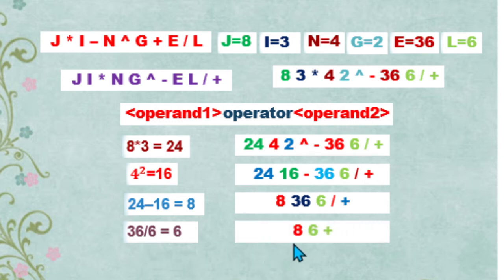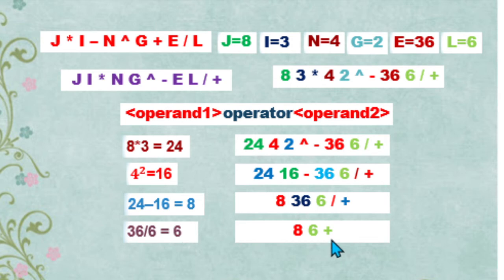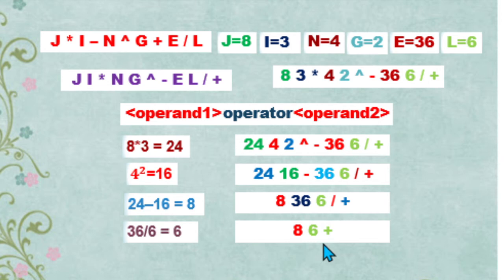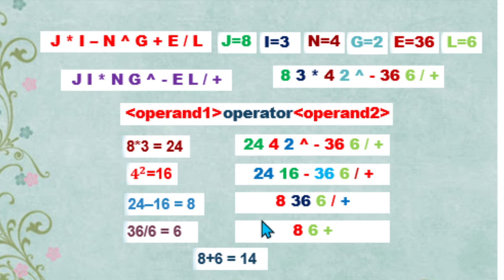Our expression now is 8, then 6 — the obtained value after performing division — and then the addition operator. This is our first and only remaining operator. Its immediate two operands are 8 and 6, where 8 is operand 1 and 6 is operand 2. We perform addition: 8 plus 6 is equivalent to 14. So 14 is our obtained value after evaluating this postfix expression without using a stack.